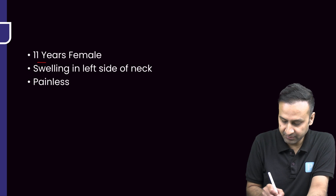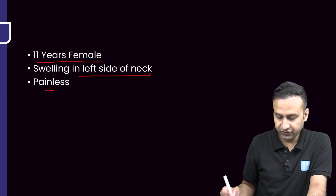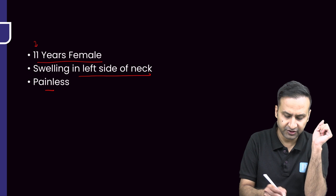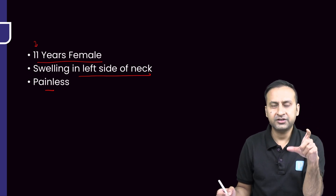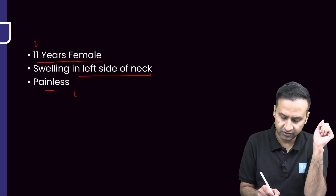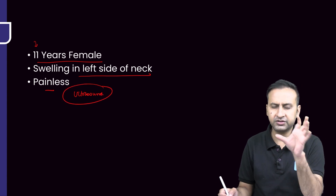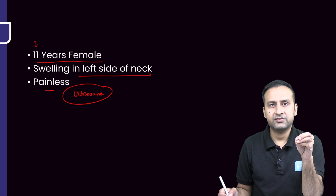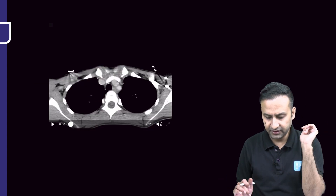We had an 11-year-old female who complained of swelling on the left side of the neck. The swelling was painless. Whenever a young patient comes to you with a swelling in the neck, the first thing you do is an ultrasound. We did the ultrasound and it found a lesion which was completely cystic, showing homogeneously low-level echoes, with no solid component, no calcification, and no color flow. So we decided to get a CT done.